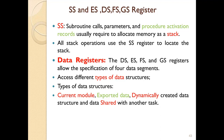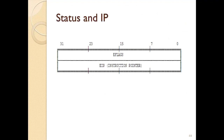Data registers such as DS, ES, FS, and GS — these four registers are data registers which allow the specification of four data segments. These data registers access different types of data structures, which can include current module data, exported data, dynamically created data, structured and shared data, and data from another task.